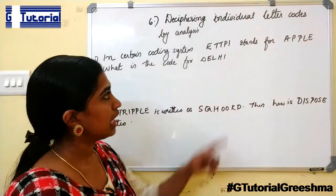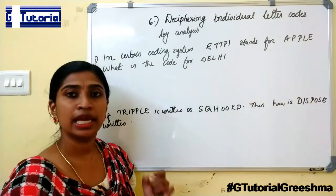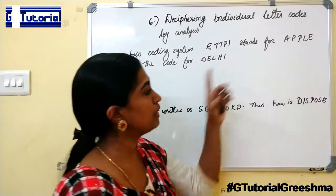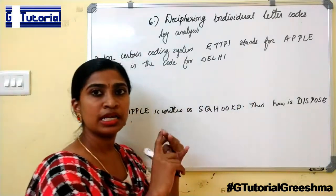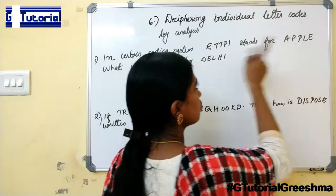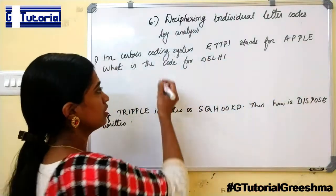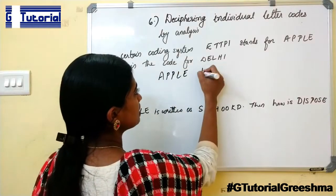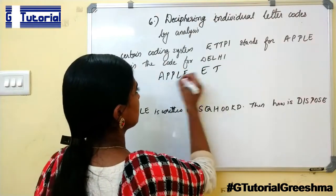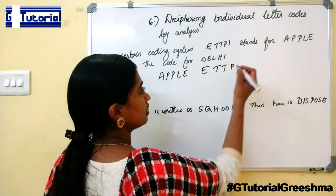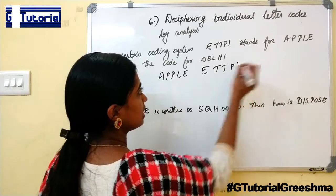How is A coded as E? A, B, C, D, E plus 4. Similarly, P, Q, R, S, T gives T. So each letter of this word plus 4 gives the code. A plus 4 is E, P plus 4 is T. Again P plus 4 is T. L, M, N, O, P. E, F, G, H, I.